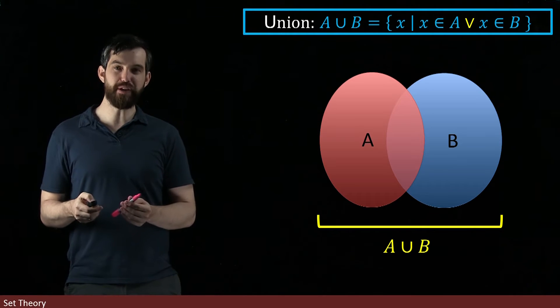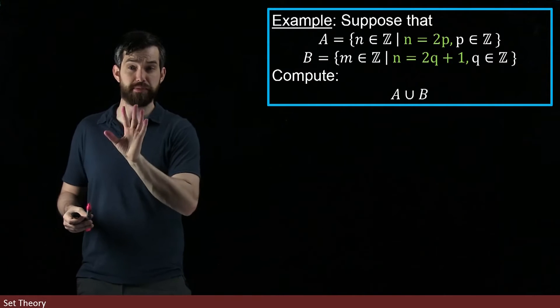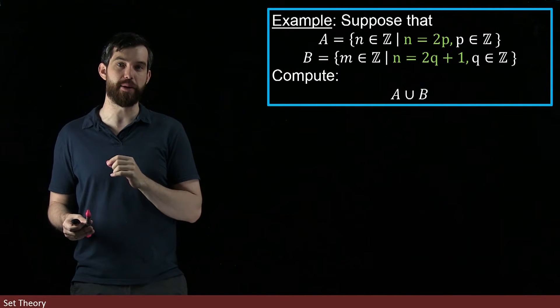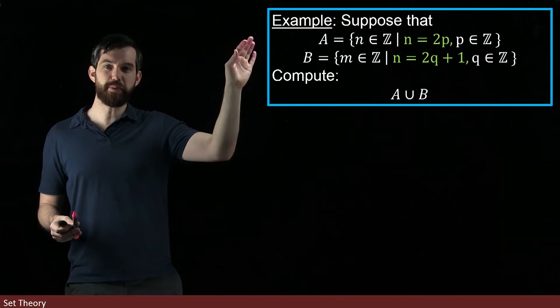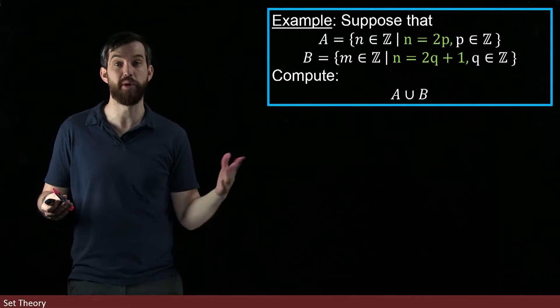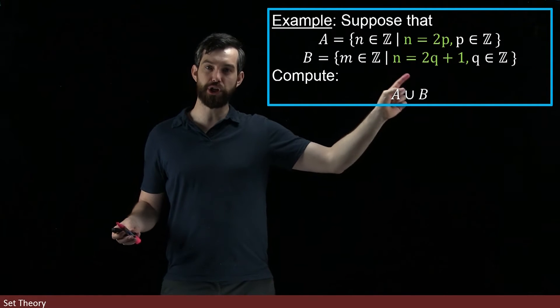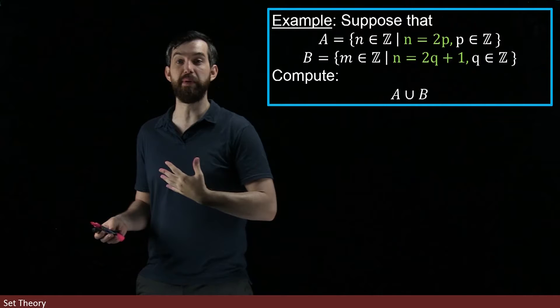So if we focus on a specific example, here's an A and a B. Notice these are different A and B's than the ones from the previous example. The A appears to be n = 2p, so that's all of the even integers when p is an integer. And B here is n = 2q + 1, so that's going to be odd integers.